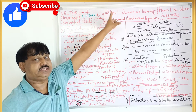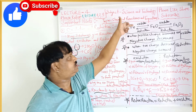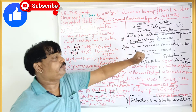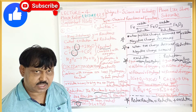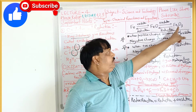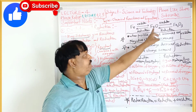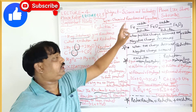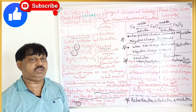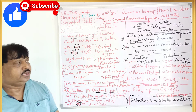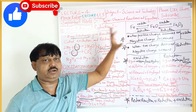Example: agar Fe ka oxidation hua, toh FeO banta hai. FeO ka oxidation hua, toh Fe2O3 banta hai. Fe2O3 ka reduction hua, toh FeO hota hai. FeO ka reduction hua, toh Fe banta hai. Ismein poora detail diya gaya hai oxidation aur reduction ke baare mein. This is the extra definition of oxidation and reduction.